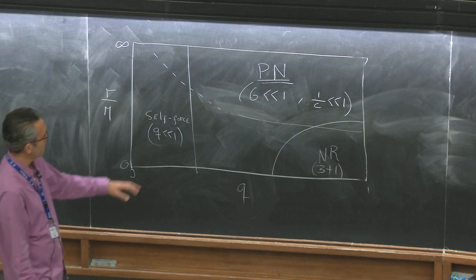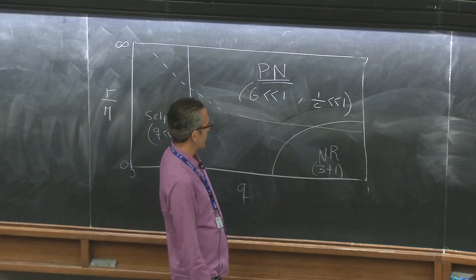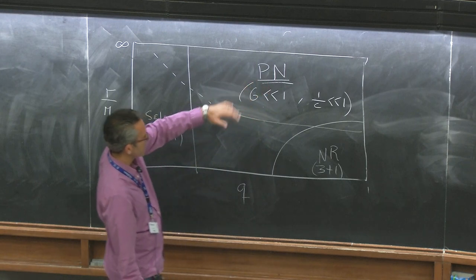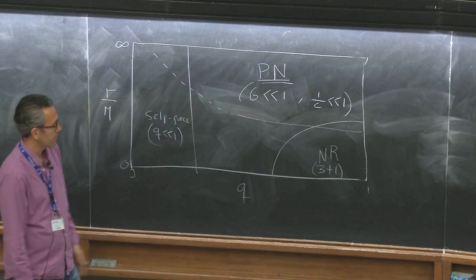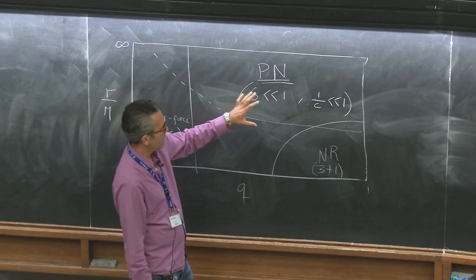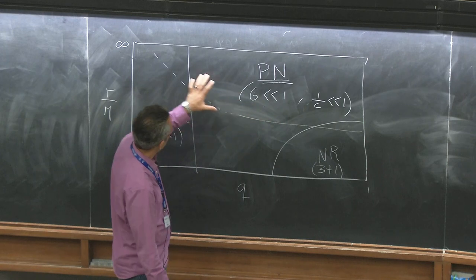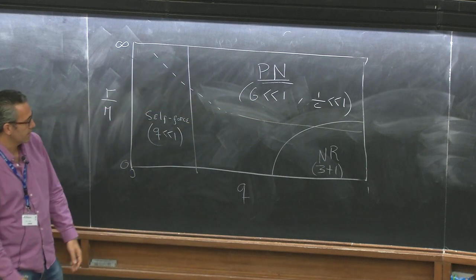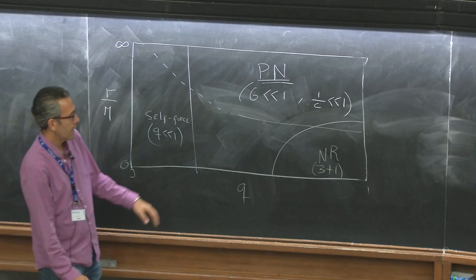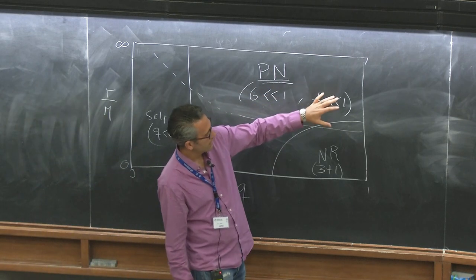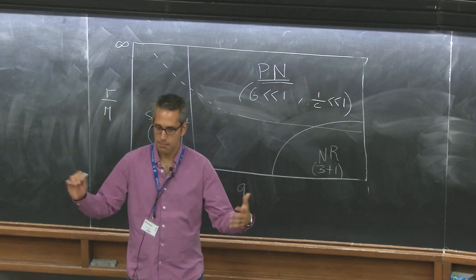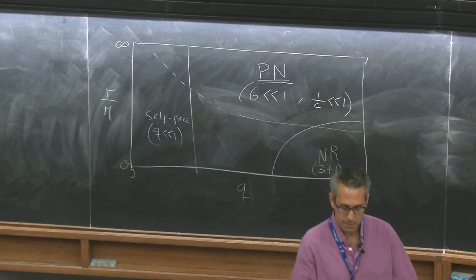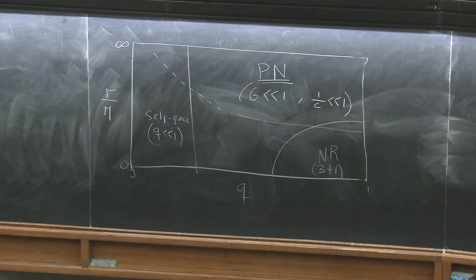Remember, this works provided the orbital separations are large relative to the characteristic length scales, and it does not work very well when you go to the extreme mass ratio limit. I'm going to be considering mostly what we call comparable mass binaries — binaries with roughly the same mass, maybe off by a factor of 10 or so.